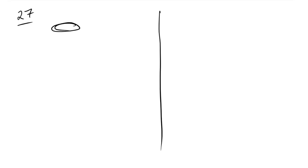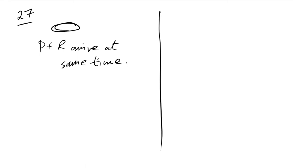Question 27: eddy currents require a complete loop. A partial coil (cut ring) won't sustain eddy currents. Therefore P and R (the partial coils) arrive at the same time, followed by Q (the complete ring). The answer supports P and R together, then Q.